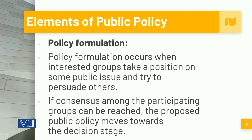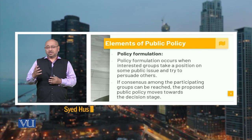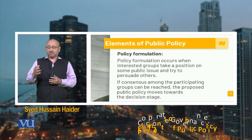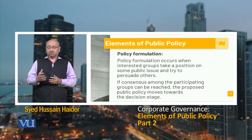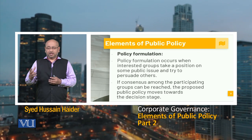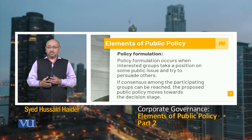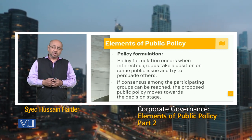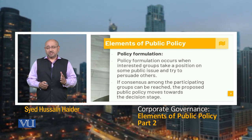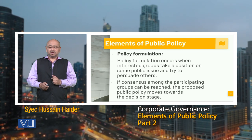Policy formation occurs when interested groups take a position on public policy issues and try to persuade others. If consensus amongst the participating groups can be reached, the proposed public policy moves towards the decision stage. There are different interest groups — for example, the sugar cartel would be looking at the sugarcane policy and the sugar mills policy, there could be the wheat cartel, and other interest groups. All of them have their own interests and they put it up for policy formulation.